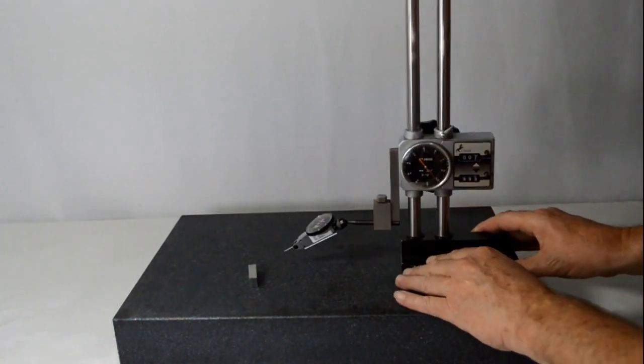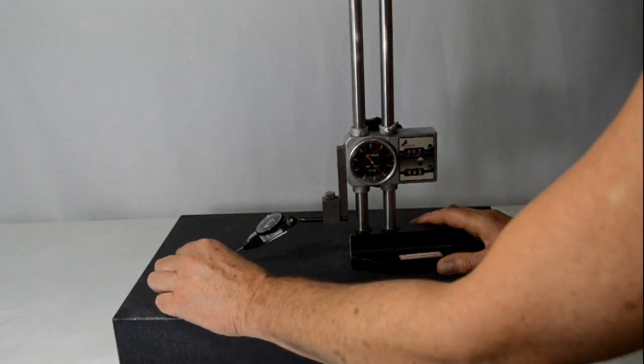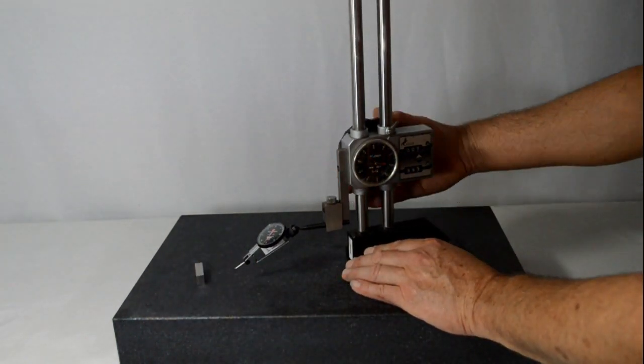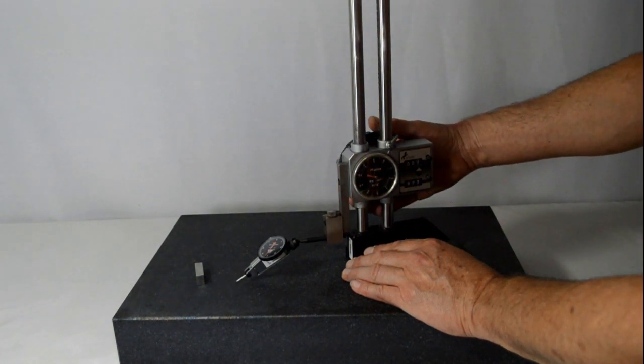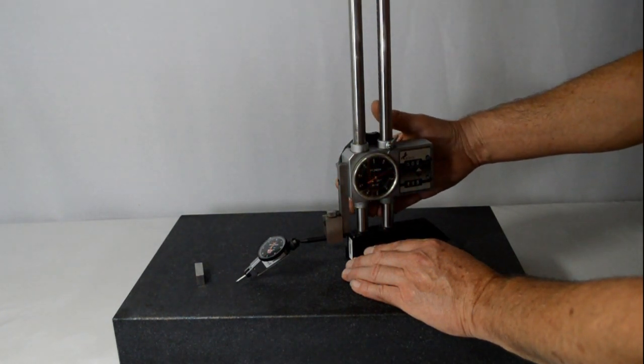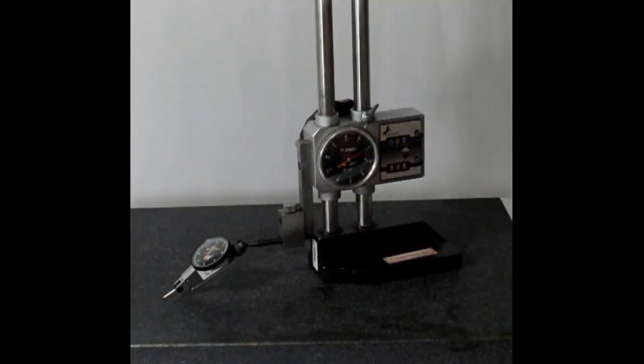The first thing we'll do is we'll come down with the part out of the way. And bring the height gauge down and set zero on the table. And this is on the indicator as well as on the dial.